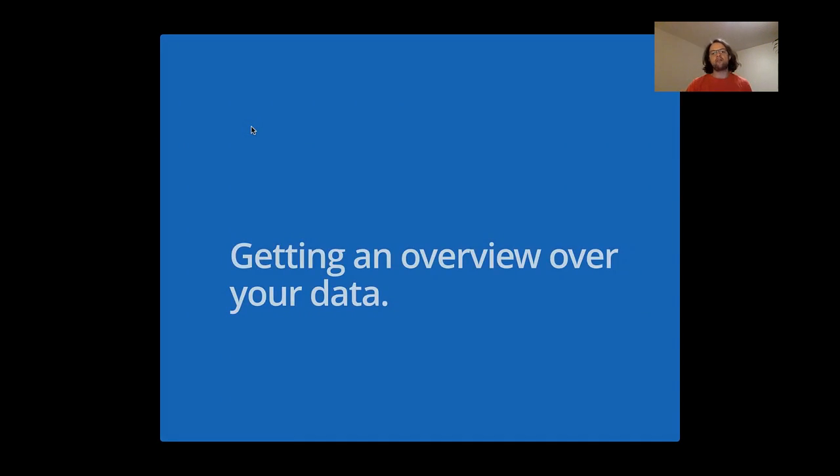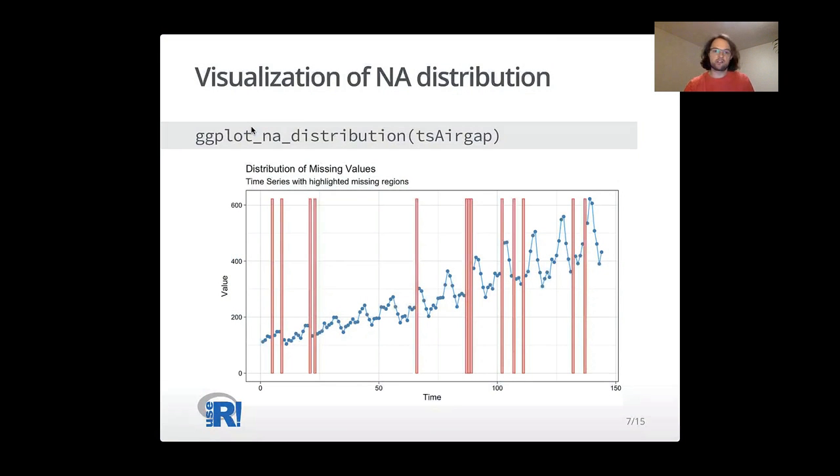Once you have a new dataset, what you want to do is getting an overview over your data. Maybe you have already realized there are some missing values, and now you want to investigate further about the distribution of these missing values. What you're doing is, you use the ggplot_na_distribution function to get a first good impression. Where are my missing values? How are they distributed in the time series? And what can I maybe do there?